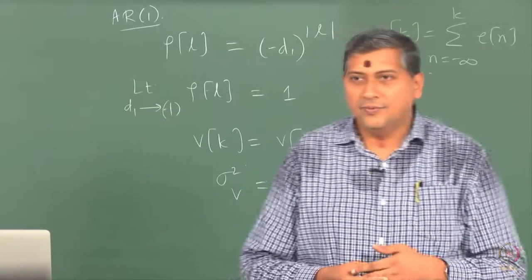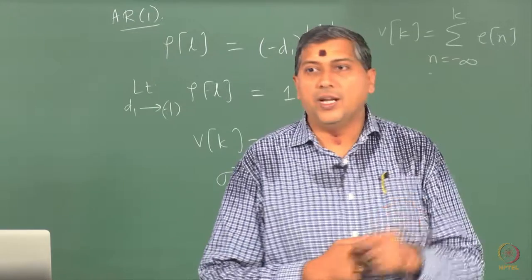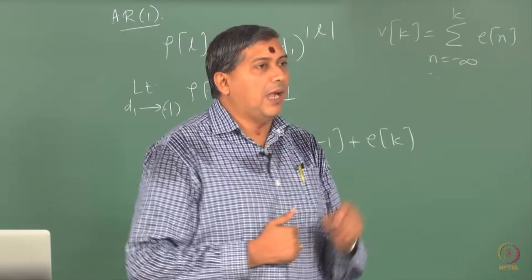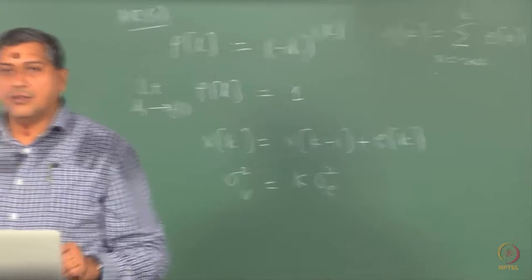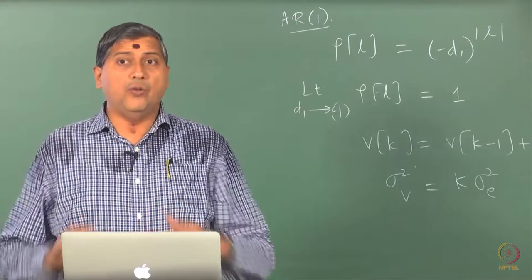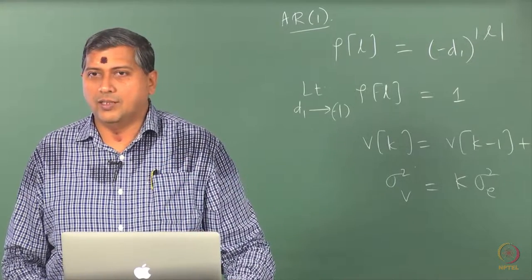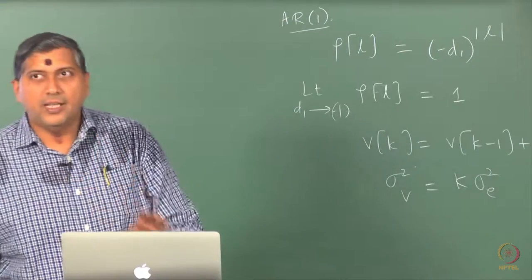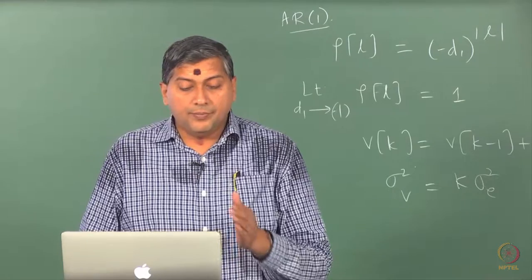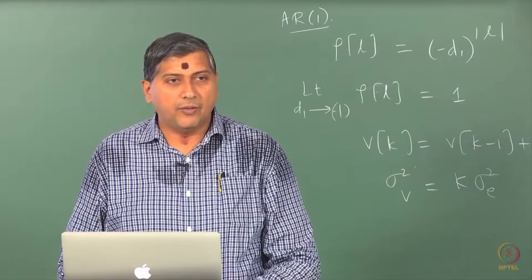Another way of detecting the presence of an integrating effect is to fit an AR1 model and see how close the pole is to the unit circle. The PACF shows you that — the value of the PACF at lag 1 is very close to unity. We know that the PACF at lag 1 is the coefficient of the AR1 model, so it tells you that if you fit an AR1 model, you will find a pole very close to the unit circle, giving an indication that there is indeed a pole on the unit circle. This is how you informally detect integrating effects.